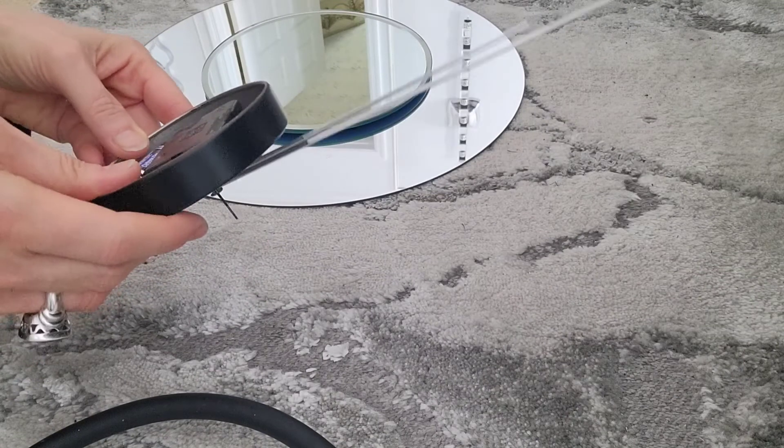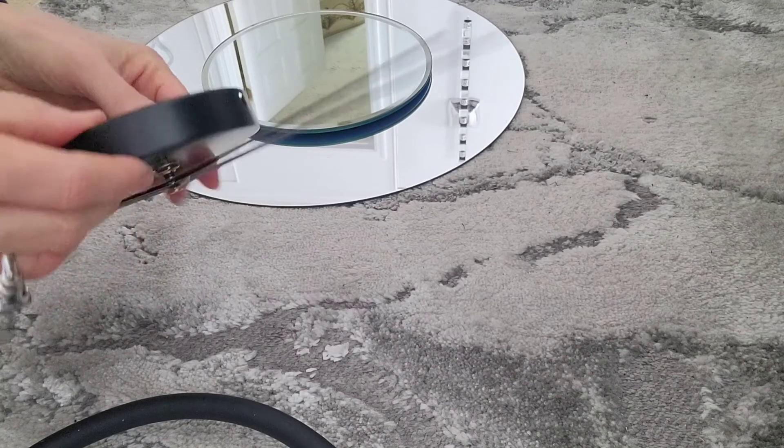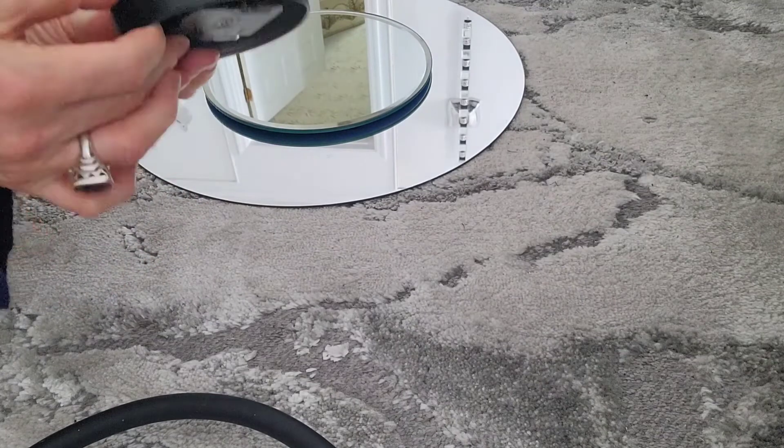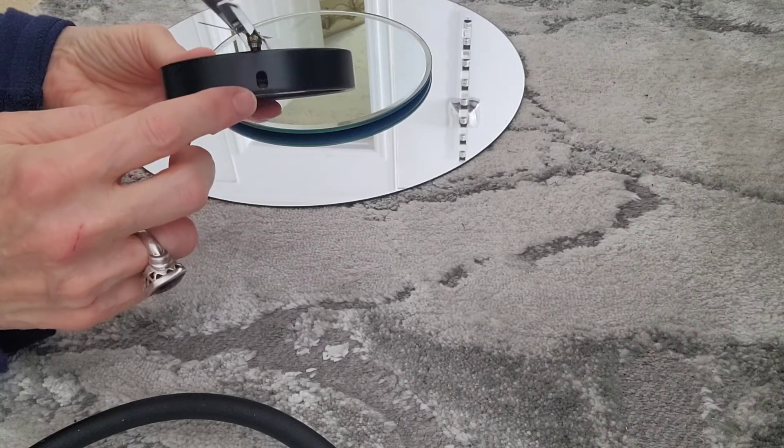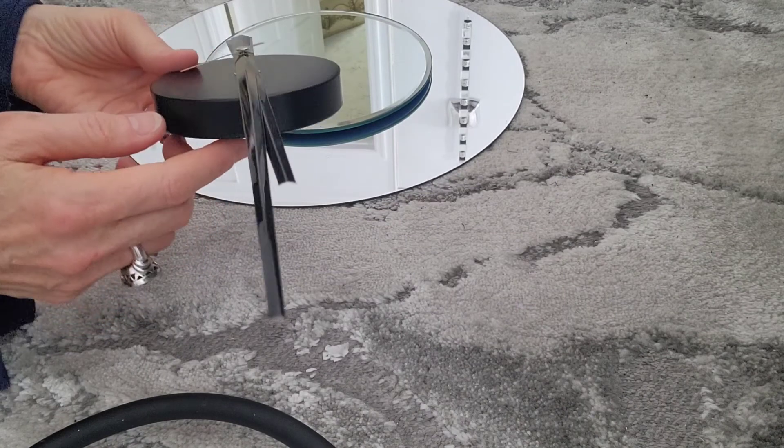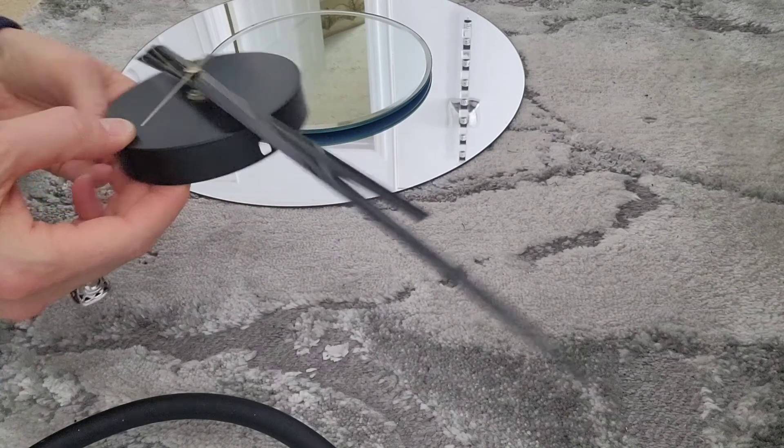You just put the hour hand first, then the minute, and then the second hand. Stick the battery in, and I use the mounting hole as my guide for the 12 o'clock position. The instructions are provided with the clock on how to set everything up.